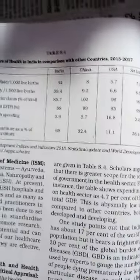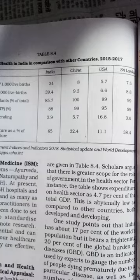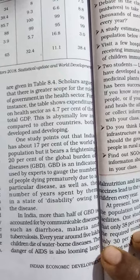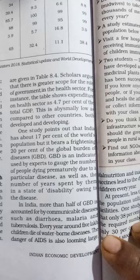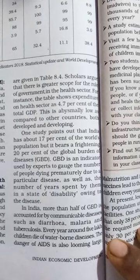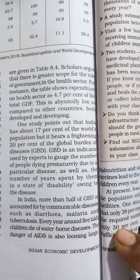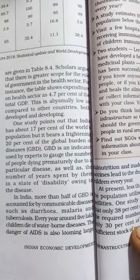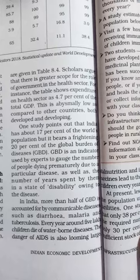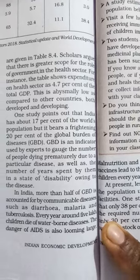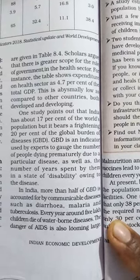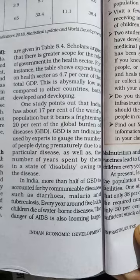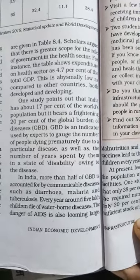This is alarmingly low as compared to other countries, both developed and developing. One study points out that India has about 17% of the world's population but bears a frightening 20% of the global burden of disease (GBD). GBD is an indicator used by experts to gauge the number of people dying prematurely due to a particular disease, as well as the number of years spent in a state of disability or illness.